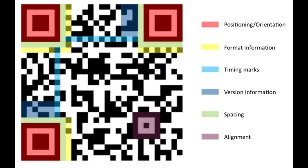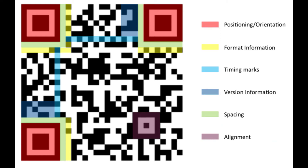There is an alignment pattern which ensures the code can be deciphered even if it's distorted, viewed from a different angle, or printed on a curved surface. There is also a timing pattern which runs horizontally and vertically between the three finder patterns, consisting of alternating black and white squares. The timing pattern makes it easy to identify individual data cells within a QR code, and is especially useful when the code is damaged or distorted.